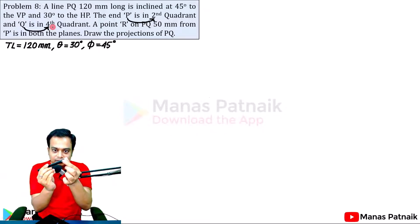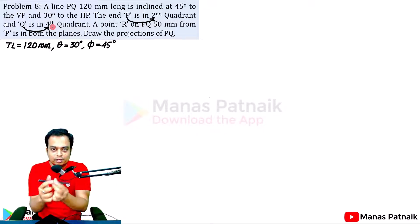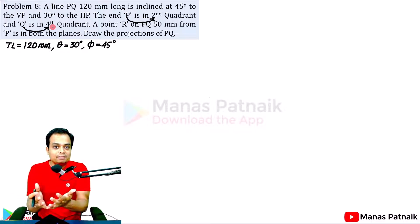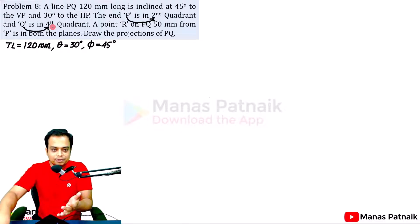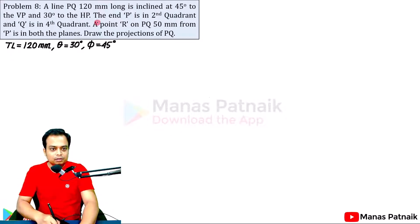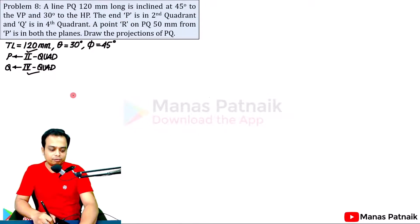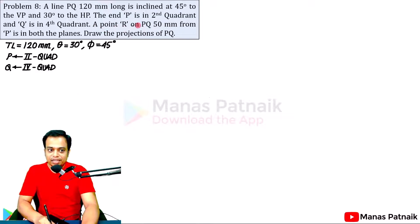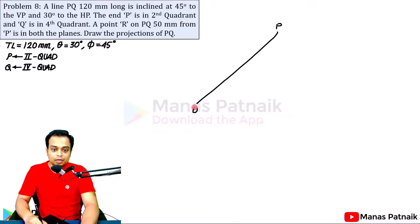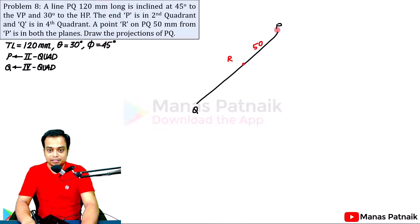One end of the line is in the second quadrant while the other end is in the fourth quadrant. To visualize it, we'll be using a 3D environment in AutoCAD. Reading further: a point R on PQ is 50 mm from P. So along the line PQ there is a point R at a distance of 50 millimeters from P. Since the total length is 120 mm, segment RQ is 70 mm.